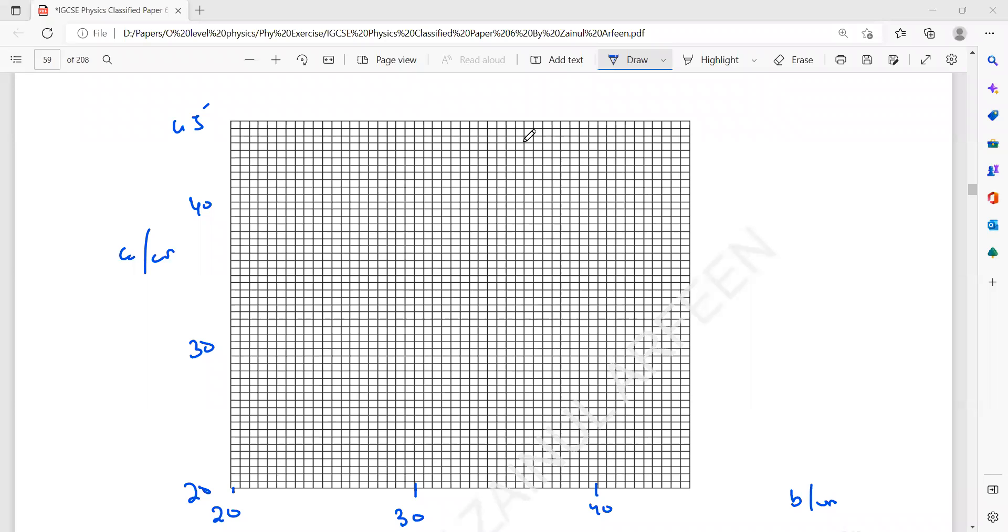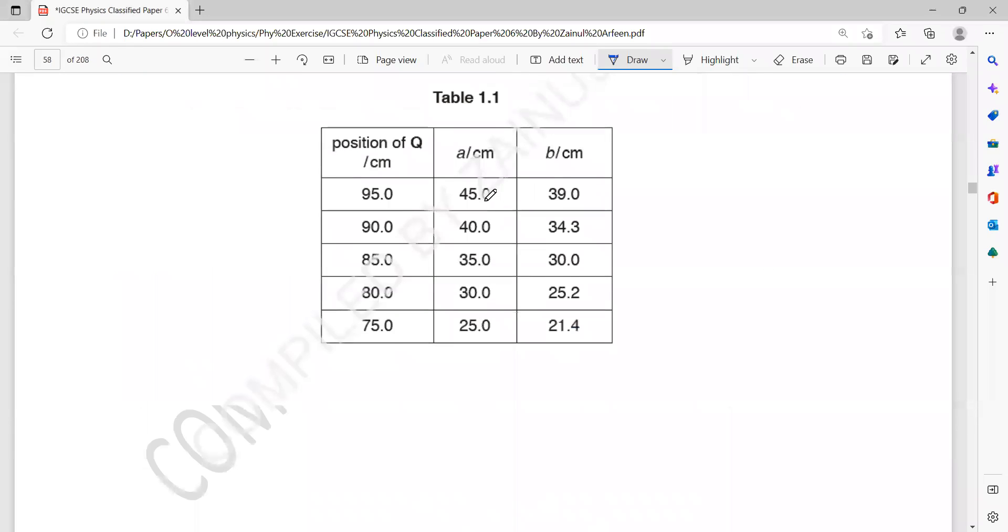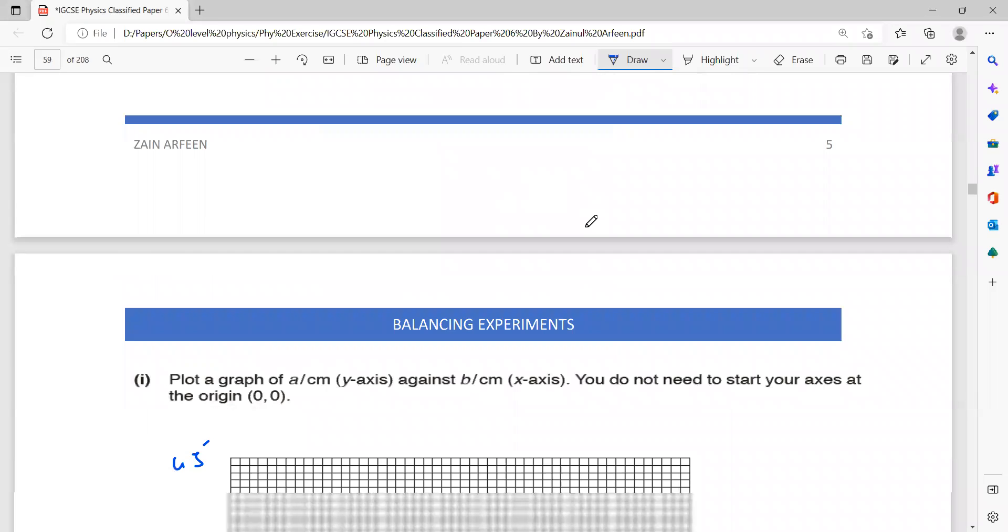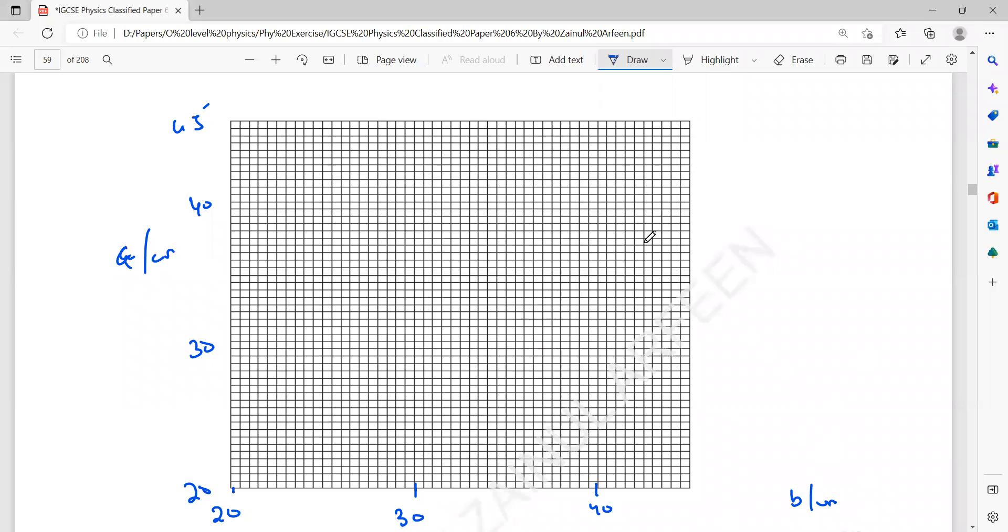The continuation of the question, we have to label the axis and then we have to mark the points. What are the points? It's 45 and 39, so this is 45 and 39.